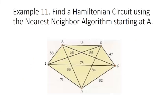Here's an example. Let's find a Hamiltonian circuit using the nearest neighbor algorithm starting at vertex A. From vertex A we could travel to B which is 18 miles away, to C which is 69 miles away, to D which is 65 miles away, or to E which is 38 miles away. So the nearest neighbor to A is vertex B, and that's where we travel first.